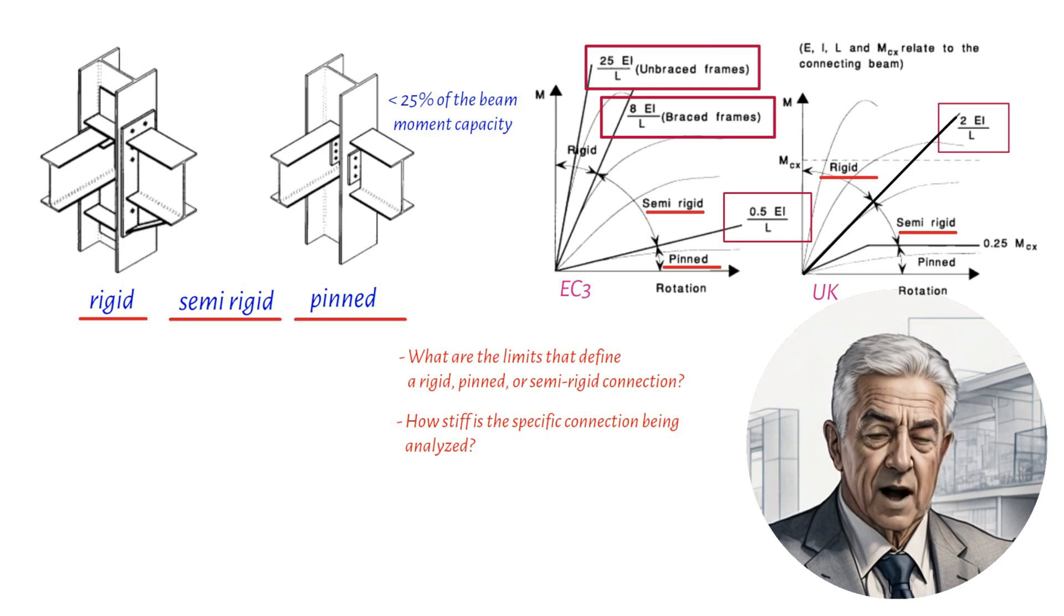Now we're going to be talking about how to model connections in structural analysis. Specifically, we'll be looking at the guidelines provided in EC3 AnnexJ, which aim to ensure that connections are modeled in a way that accurately reflects their expected behavior under relevant loading. Moving on, firstly, we need to understand that connections have different levels of stiffness, which can affect how they behave under different loads. In order to accurately model connections, we need to consider the assumptions made in the analysis and ensure that the connection design reflects the real details.